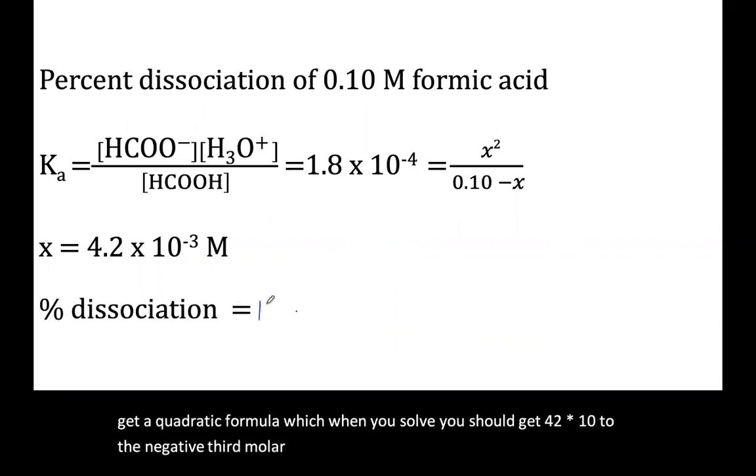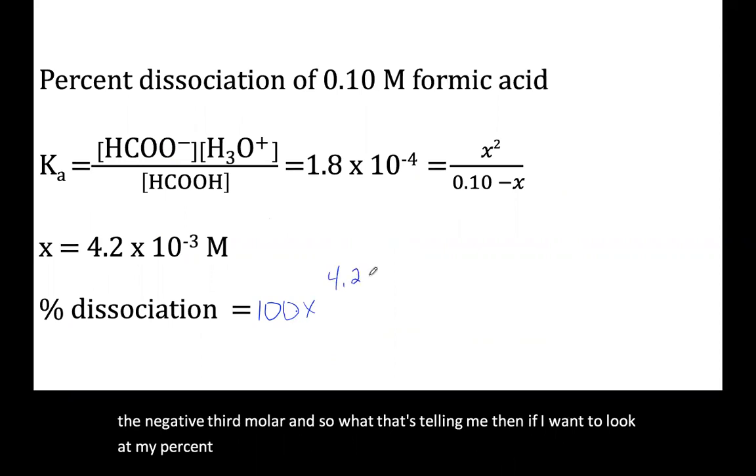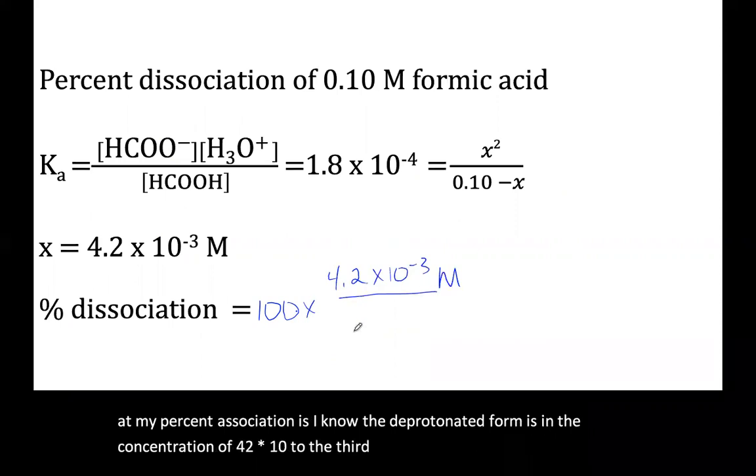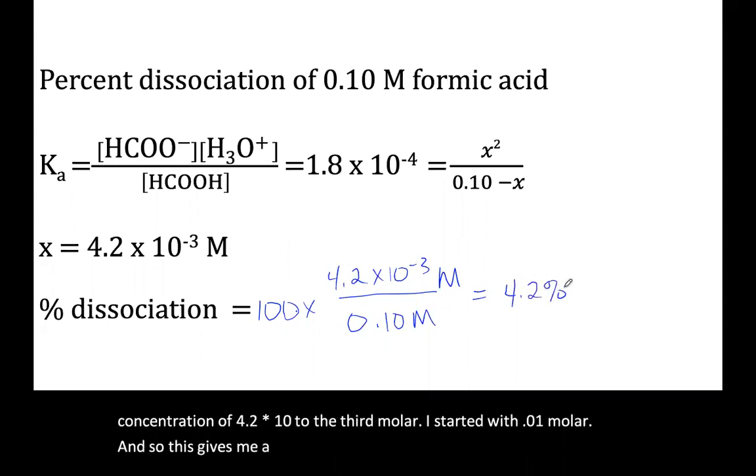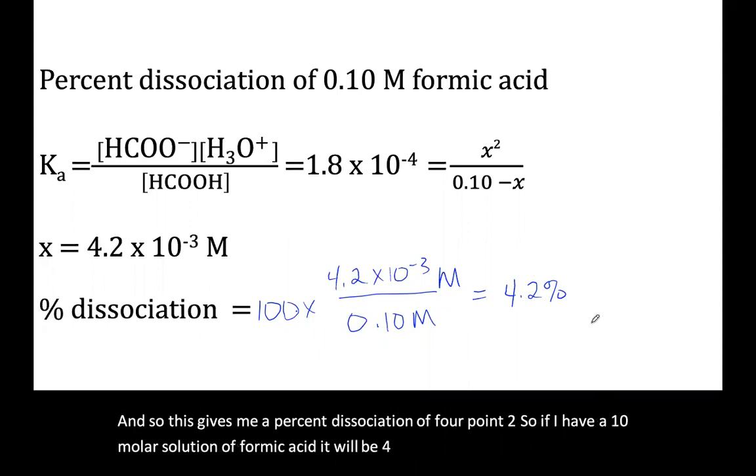And so what that's telling me then, if I want to look at my percent dissociation, is I know the deprotonated form is at a concentration of 4.2 times 10 to the negative third molar. I started with 0.10 molar. And so this gives me a percent dissociation of 4.2%. So if I have a 0.10 molar solution of formic acid, it will be 4.2% deprotonated.